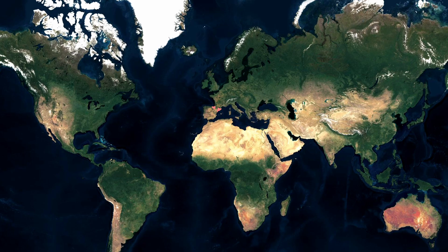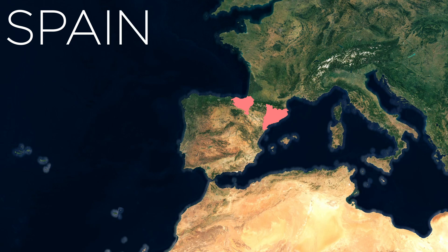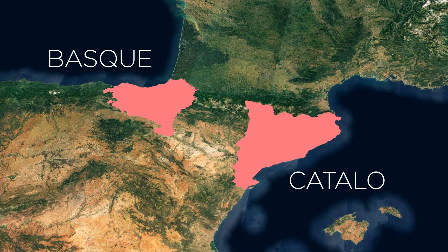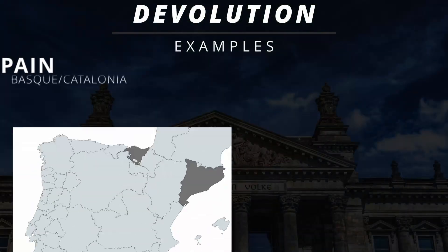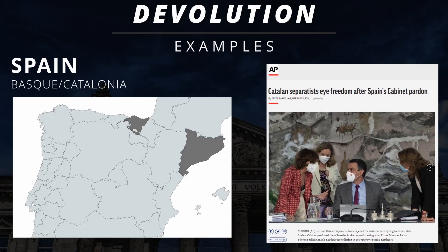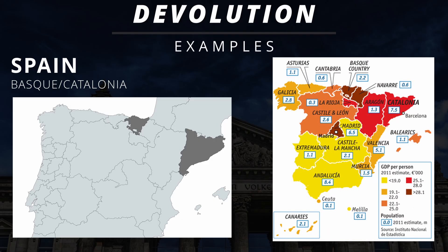Now let's move on to the actual case studies of devolution that might be useful for your exams, beginning with the Basque and Catalonia, two regions in Spain that have a history of seeking devolution for cultural purposes. These two regions speak different languages from the rest of Spain and have a drastically different culture as well. This separatist movement is still ongoing for Catalonia, and there are also economic ties to the devolutionary movement. Catalonia has the highest GDP output out of all the provinces of Spain, leading to devolutionary sentiment because they feel like they are carrying the team.